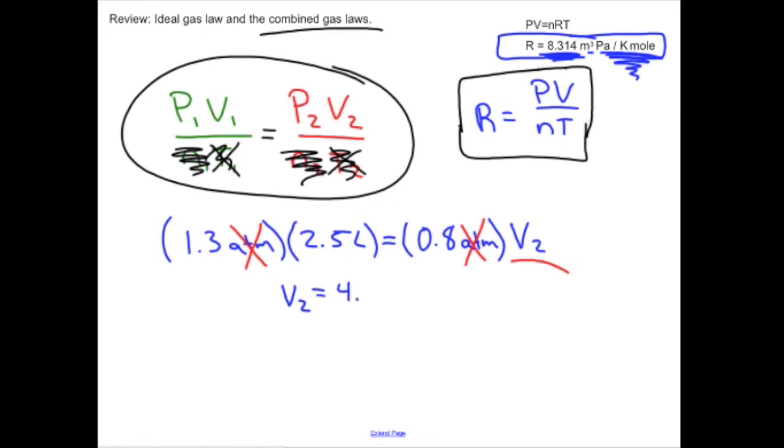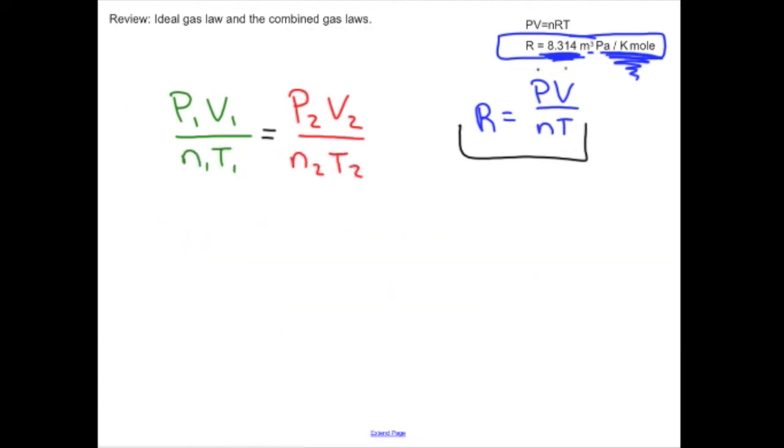If I just briefly finish off this little problem though and I say that V₂, this would be 4.0625 if I hold on to all of my digits. That would be in liters, again because my original volume was in liters, and from there I could cut it down according to how many sig figs I had. I wasn't being very careful about my sig figs in this particular example.